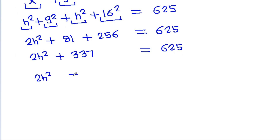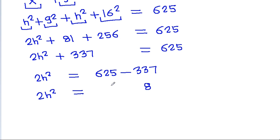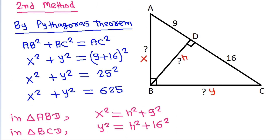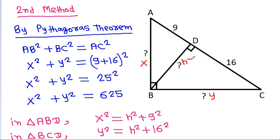So 2h squared equals 625 minus 337, giving 2h squared equals 288. Therefore h squared equals 288 divided by 2, so h squared equals 144, and h equals the square root of 144, which is 12.